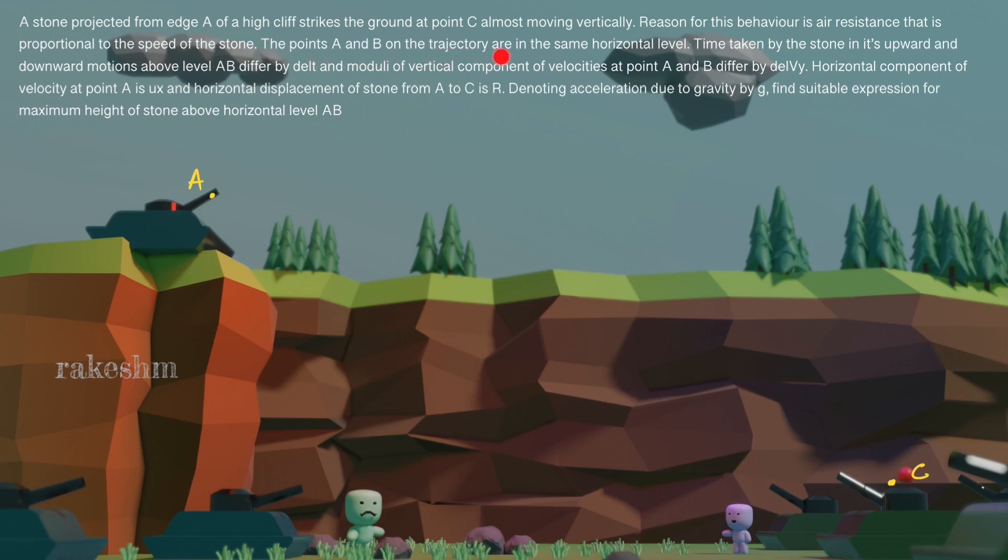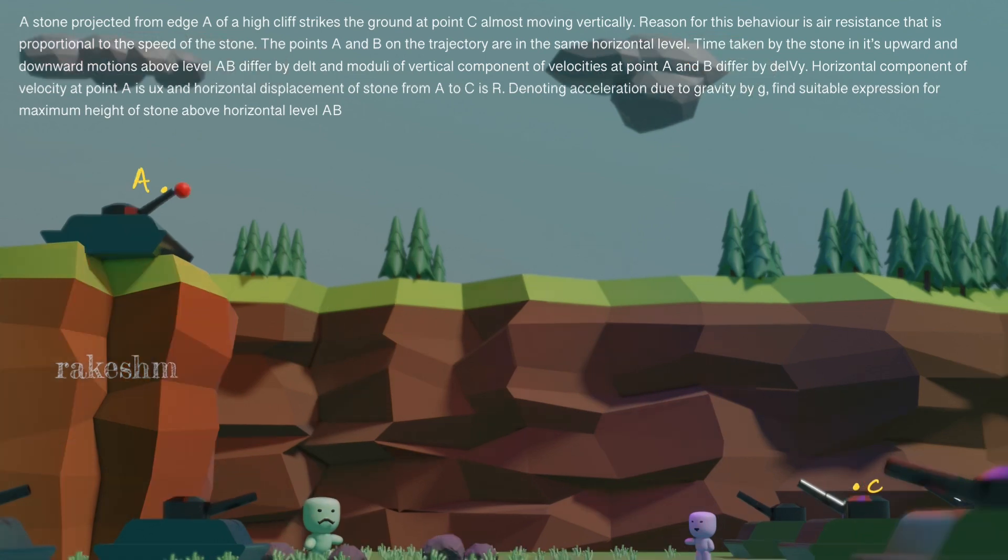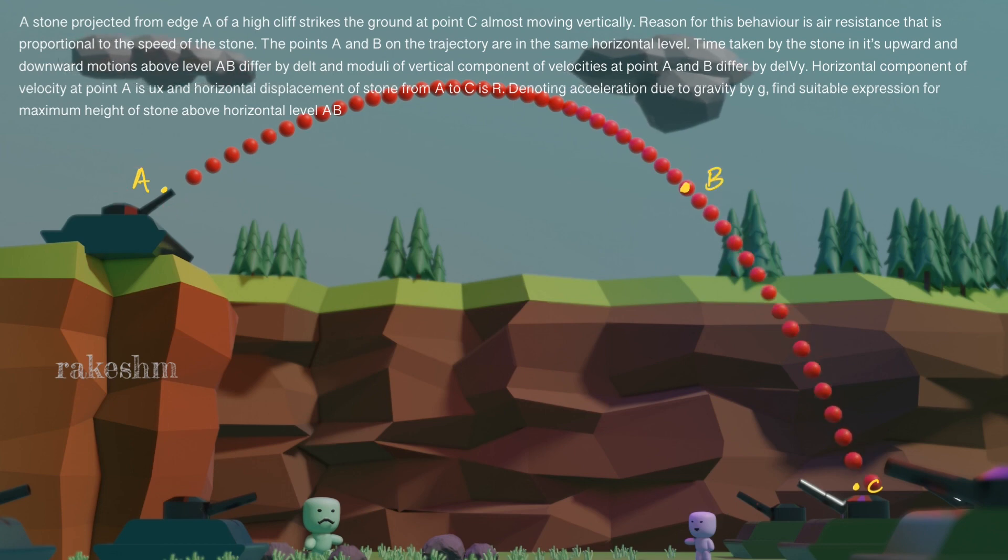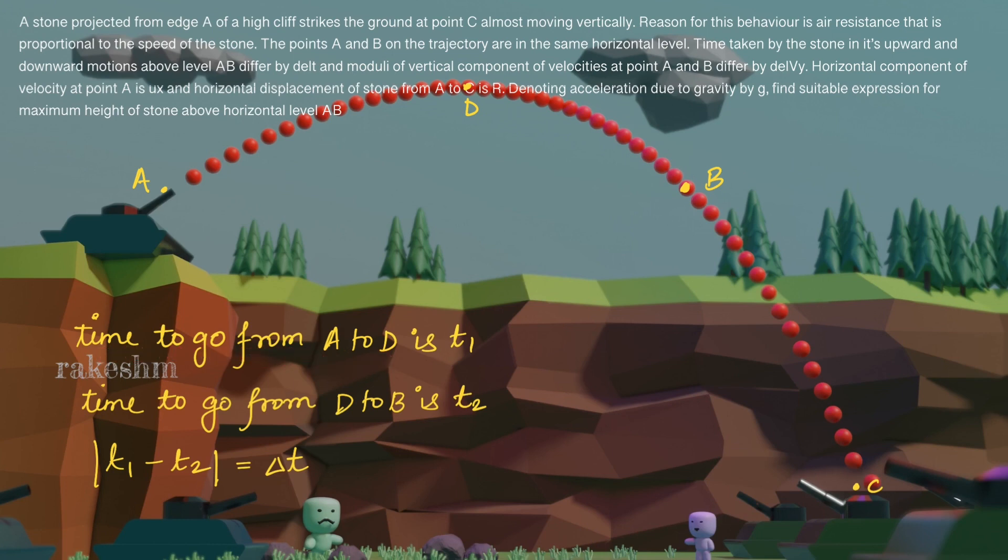The points A and B on the trajectory are at the same horizontal level. Let us look at the trajectory of the stone so that it is more easy for you to visualize. So we have A and B at the same horizontal level. Next, time taken by the stone and its upward and downward motions above level AB differ by delta T. So if the time to go from A to D is T1, and time to go from D to B is T2, then modulus T1 minus T2 equals delta T.